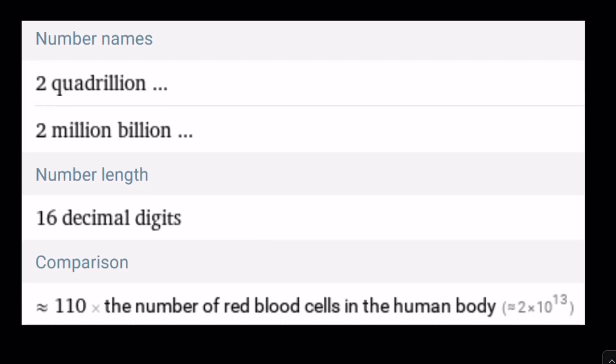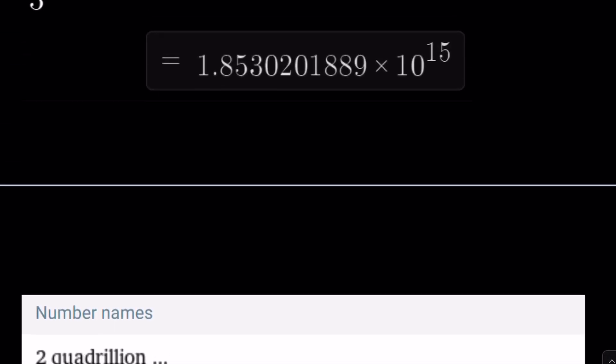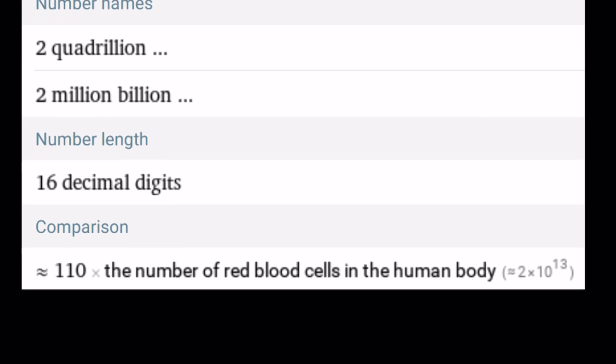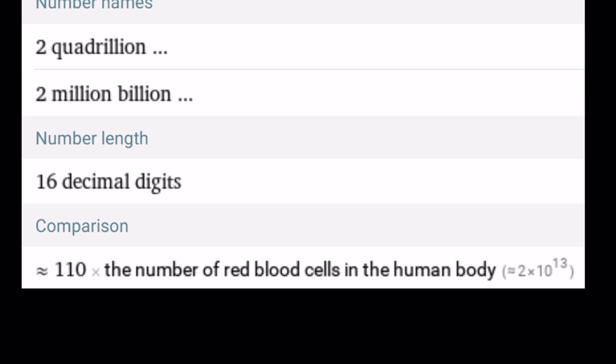But not only that, we can also name it. What are they called? Quadrillion. So our numbers are like kind of 2.2 quadrillion and 1.8 quadrillion or million billion. How about that? 16 decimal digits. And as a comparison, it's about 110 times the number of red blood cells in the human body. I don't know if you're going to need this information, but that's a large number.